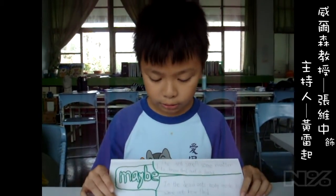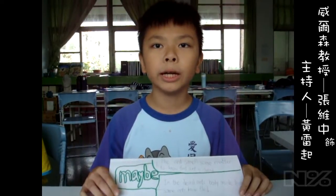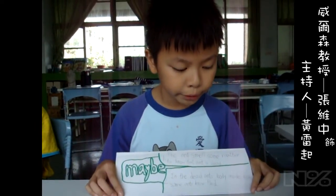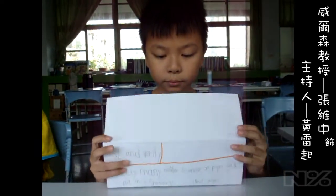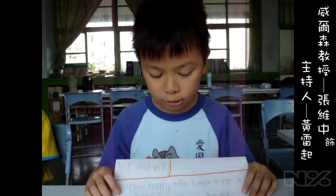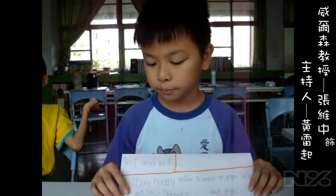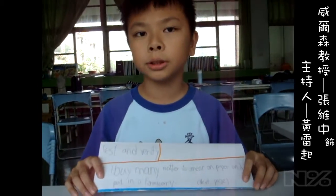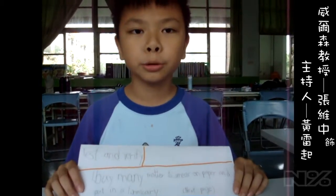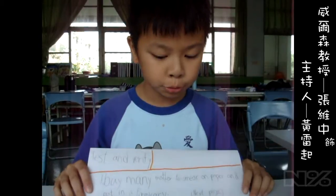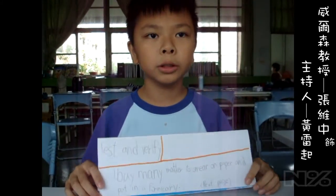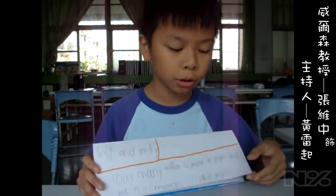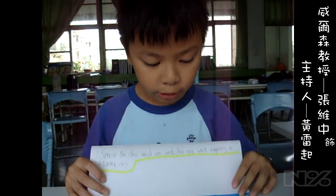第二個假設是，蚂蟻屍體中的少數物質會引發搬屍反應。接下來我進行實驗，我發現蚂蟻死後會分泌某些物質。我買了相關材料進行測試，發現某些物質的另一面也會引發蚂蟻的搬屍反應。然後我發現蚂蟻死後會觸發搬屍行為，於是我做了第二個實驗。